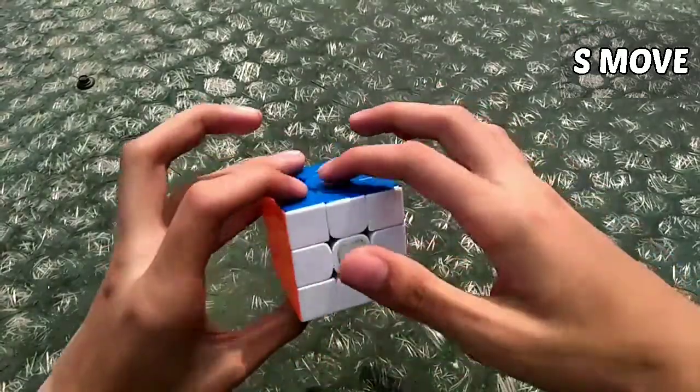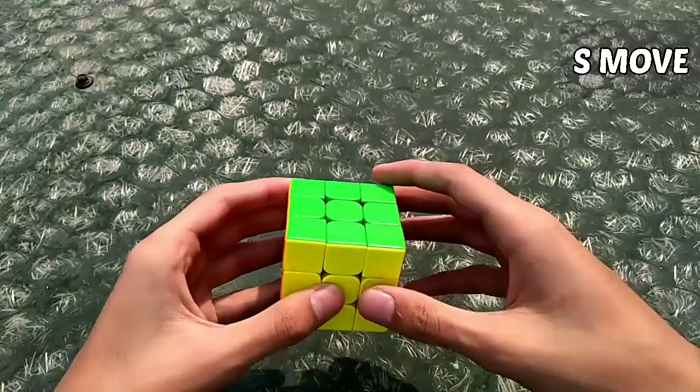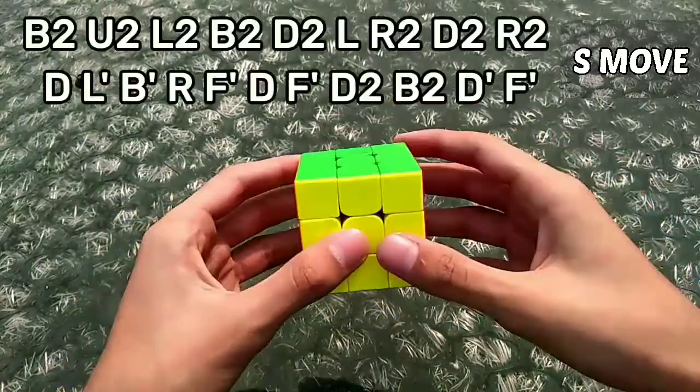So he did the blue cross, but I'll show you in white. To scramble it according to white, you have to hold the cube like this: green top, yellow front, and scramble it.